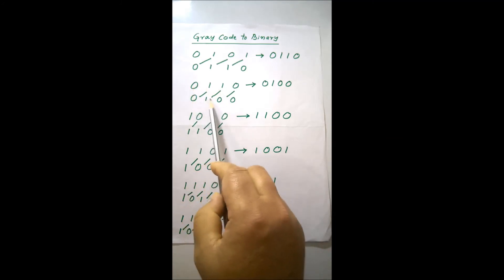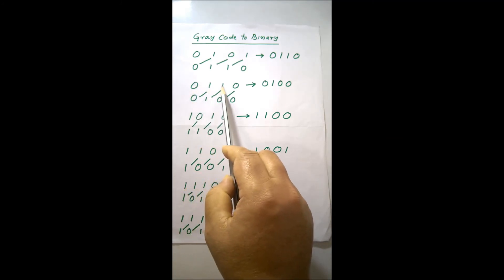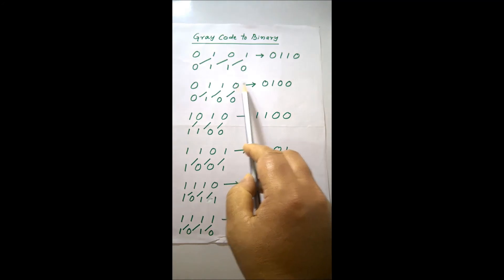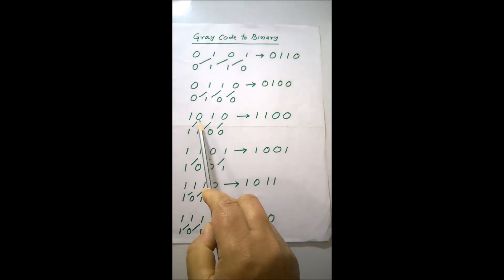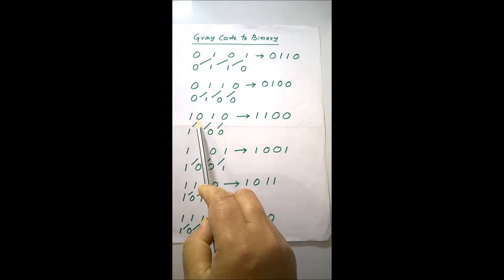conversion would be, this is the conversion. 0, 1, 1, 0 is the grey code and the binary is 0, 1, 0, 0. Exactly in the similar way, you can do the rest also. I have shown the rest also. That is the procedure, another alternative procedure for conversion from grey code to binary.